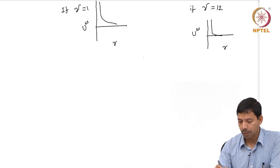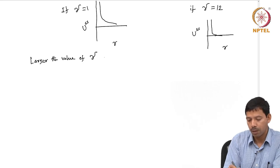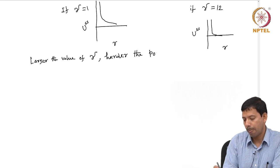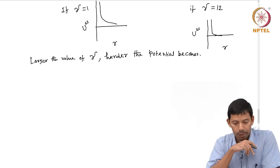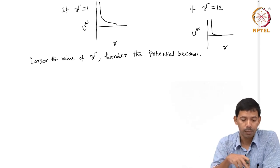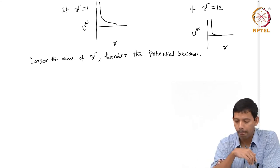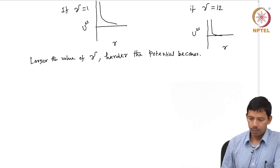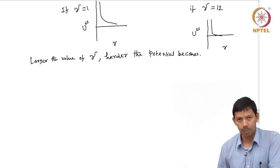What this indicates is that larger the value of gamma, harder the potential becomes. As you increase the gamma value, the soft sphere potential turns out to behave like a hard sphere potential. So at high values of gamma, soft sphere and hard sphere potentials will have almost the same nature.